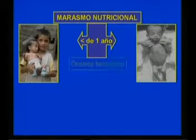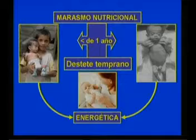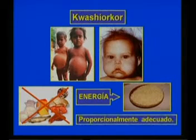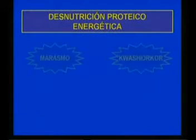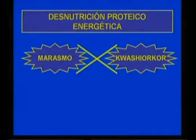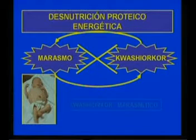El marasmo nutricional es típico en niños menores de un año que han sufrido un destete temprano y en los cuales se ha introducido la lactancia artificial en condiciones higiénico-ambientales inadecuadas. Es la forma de desnutrición proteico-energética predominantemente energética. La desnutrición en la línea del kwashiorkor es la forma edematosa, caracterizada por un ingreso muy deficitario de proteínas con un aporte de energía en forma de carbohidratos proporcionalmente más adecuado. El niño puede pasar de una línea a la otra y desarrollar formas intermedias muy graves que reciben el nombre de kwashiorkor marasmático.